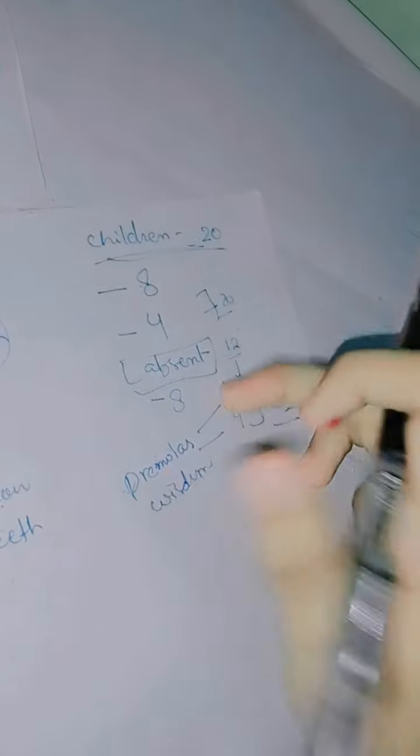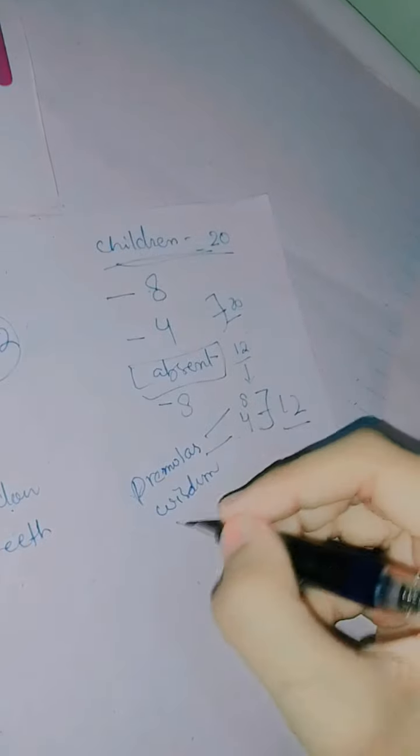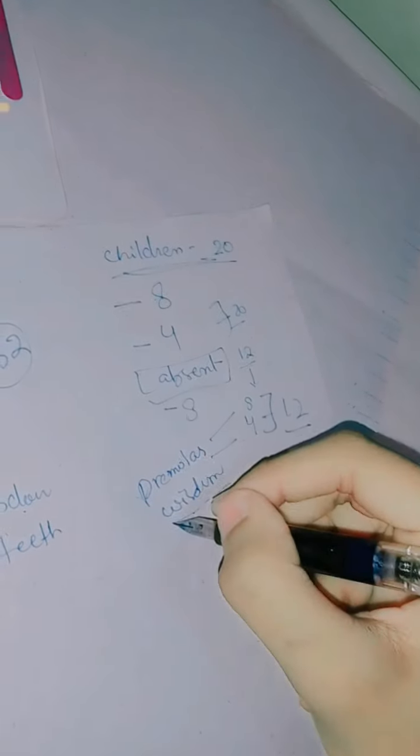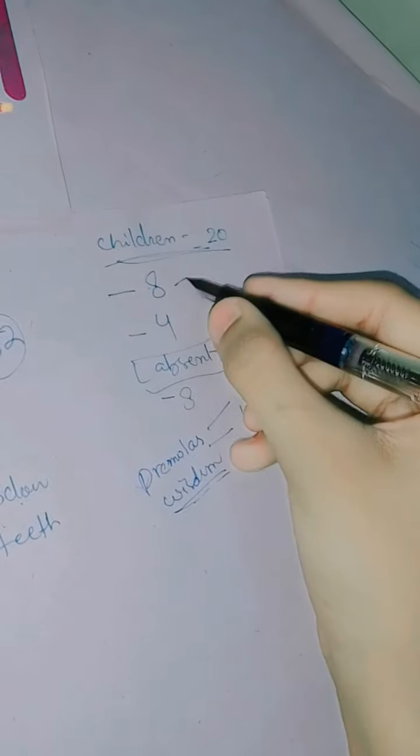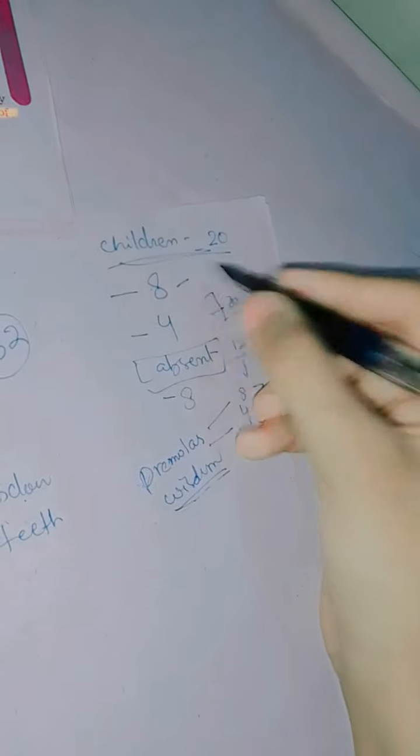In children, only incisors, canines, and molars are present — used for cutting, tearing, and chewing respectively. Premolars and wisdom teeth are absent in milk teeth.